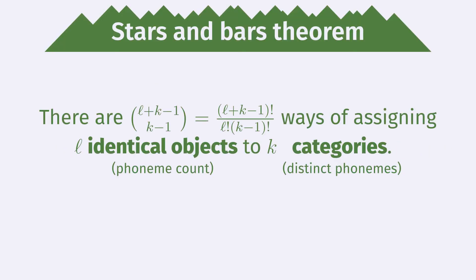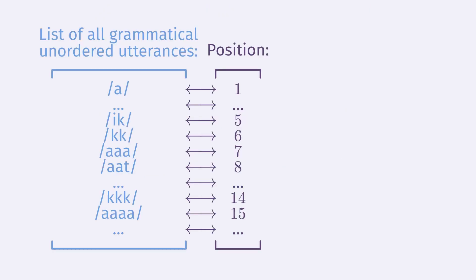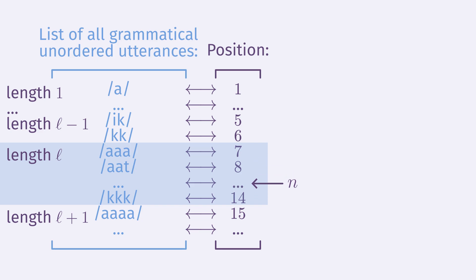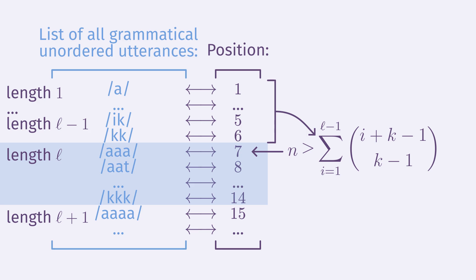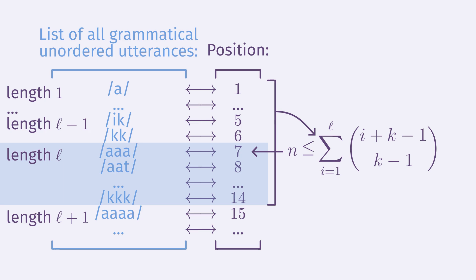Using the stars and bars theorem (also known as the sticks and balls theorem), this equals (L + K − 1) choose (K − 1), which is (L + K − 1)! / (L! · (K−1)!). We can now find what positions N on the list are occupied by unordered utterances of length L. N must be greater than the number of utterances with length less than L — which sums to (L + K − 1) choose K minus 1 — so the lower bound of N is (L + K − 1) choose K. The upper bound is (L + K) choose K minus 1.